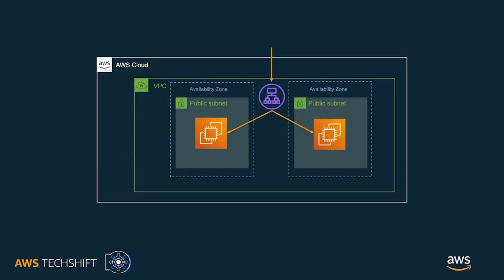In this simplified view of the architecture, we can now use the AMI to create an EC2 autoscaling group. The autoscaling group, or ASG, will add and remove instances using the configured AMI as a template.